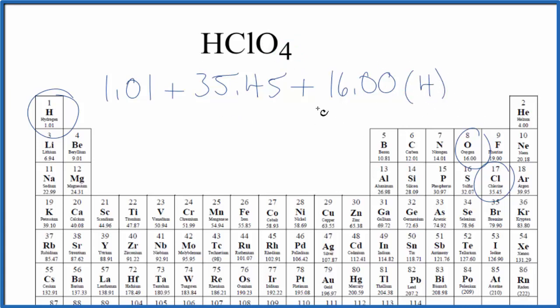When we do the math here, we find that the molar mass for HClO4, that perchloric acid, is 100.46, and the units are grams per mole.